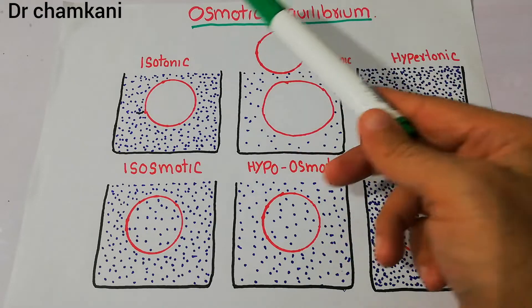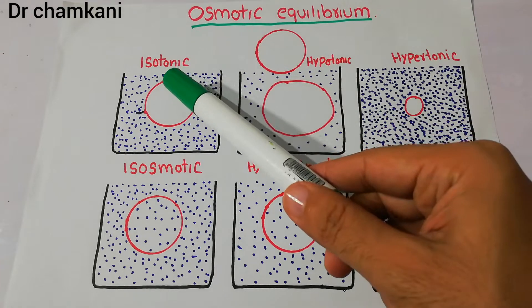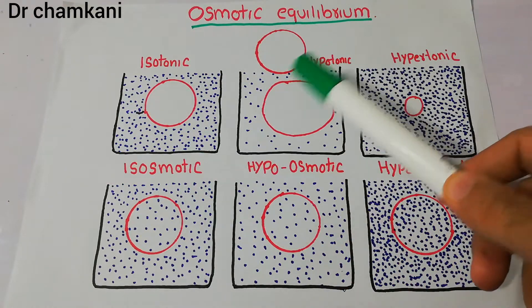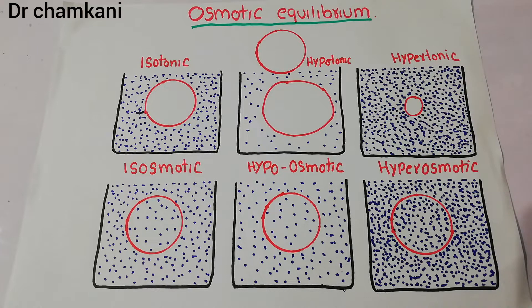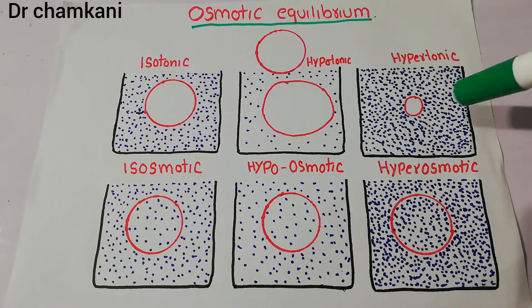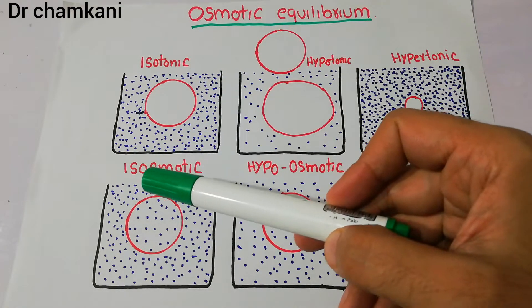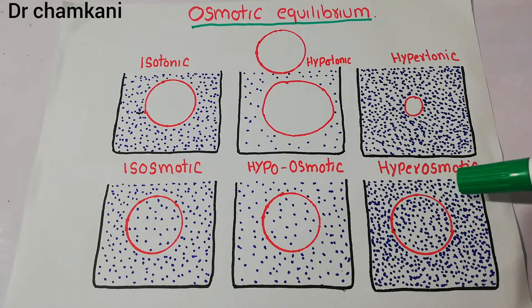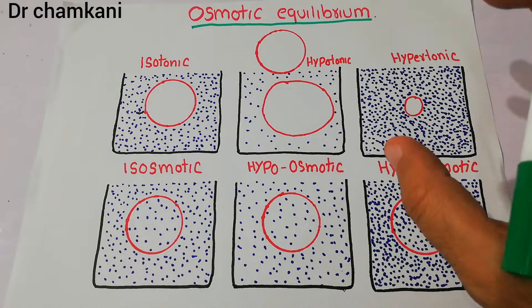In this lecture we are going to talk about osmotic equilibrium and the role of different types of fluids: isotonic, isoosmotic, hypotonic, hypoosmotic, hypertonic, and hyperosmotic. In our last lecture we discussed isotonic, hypotonic, and hypertonic fluids. Today we are going to discuss those terminologies in relation to isosmotic, hypoosmotic, and hyperosmotic, and see the different effects these fluids have on human cells.